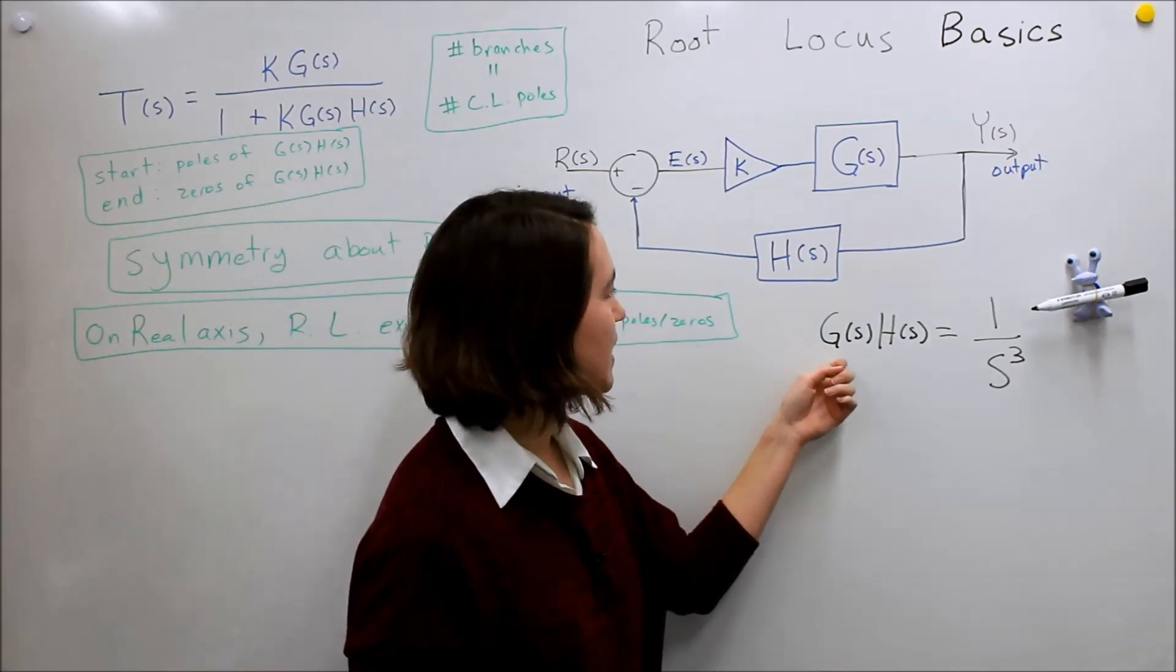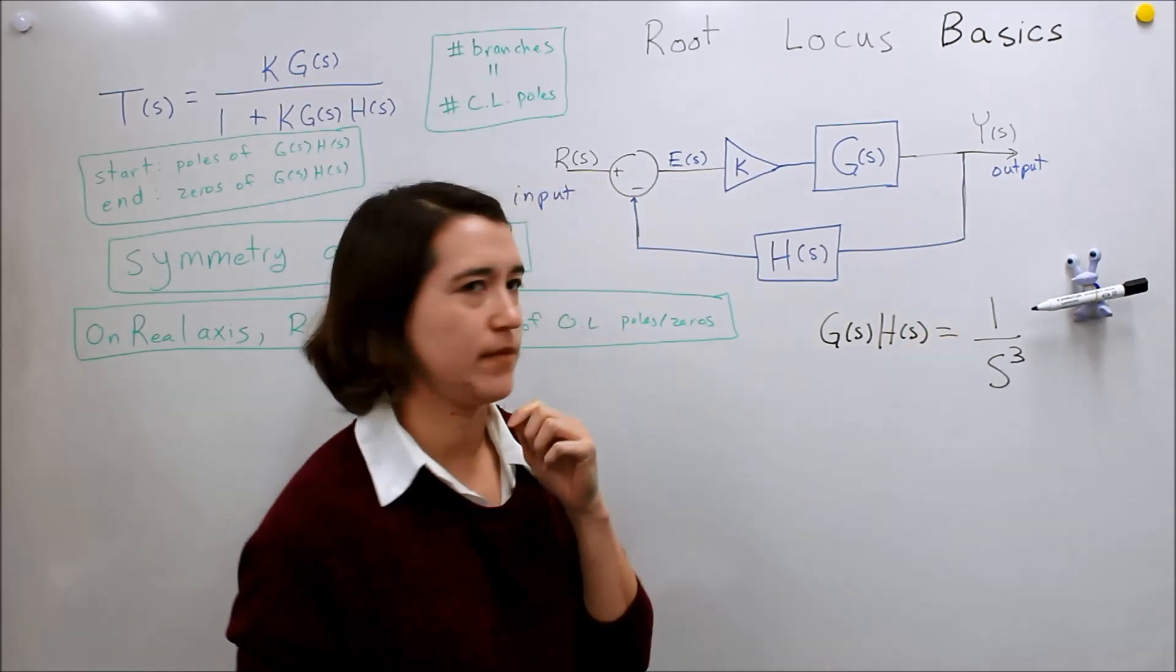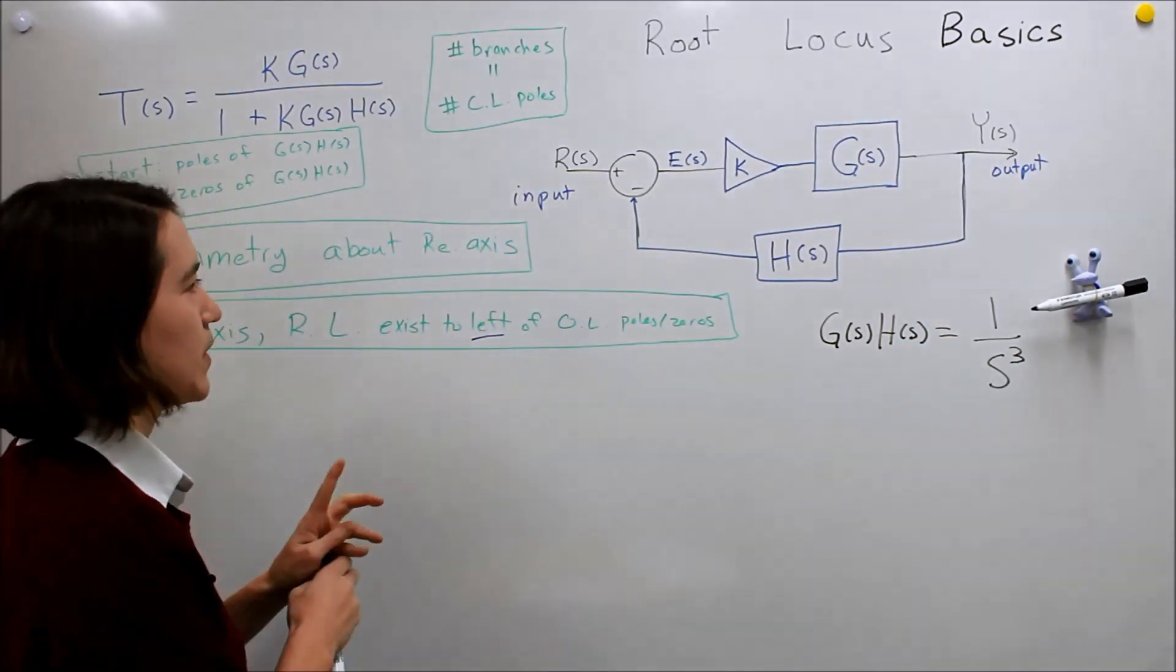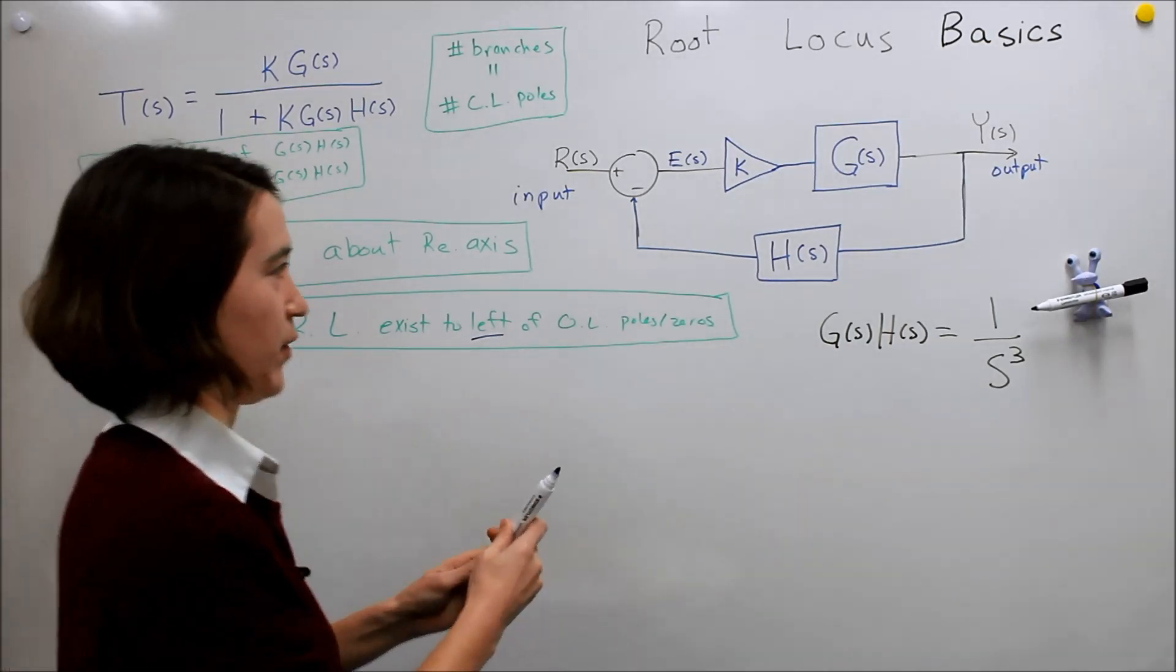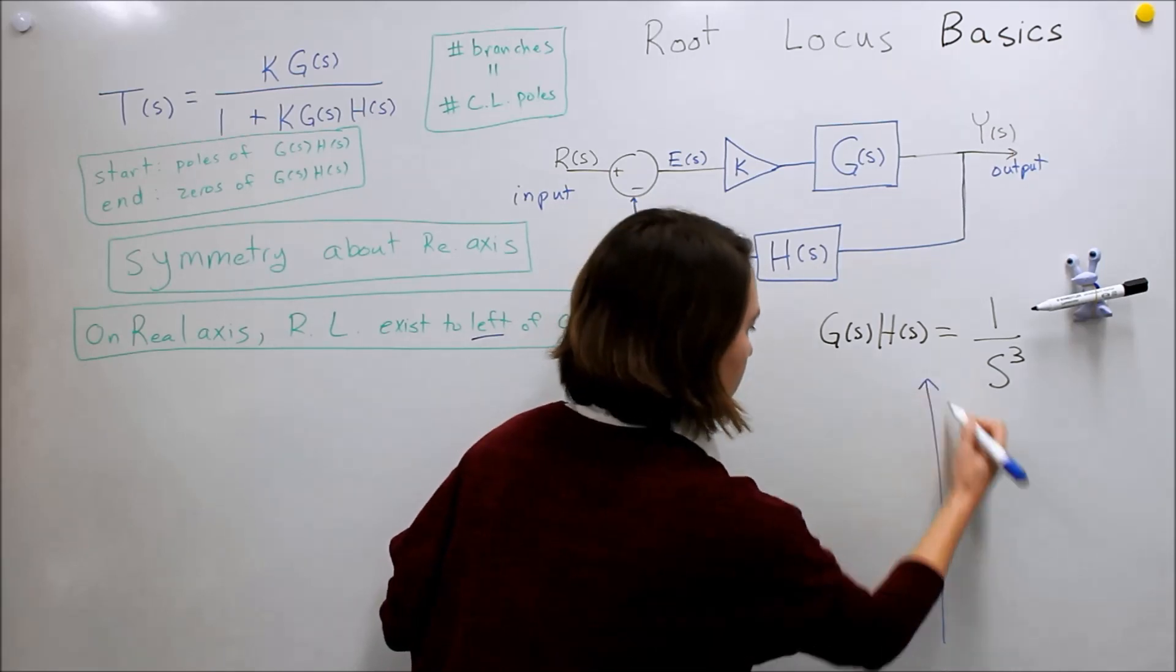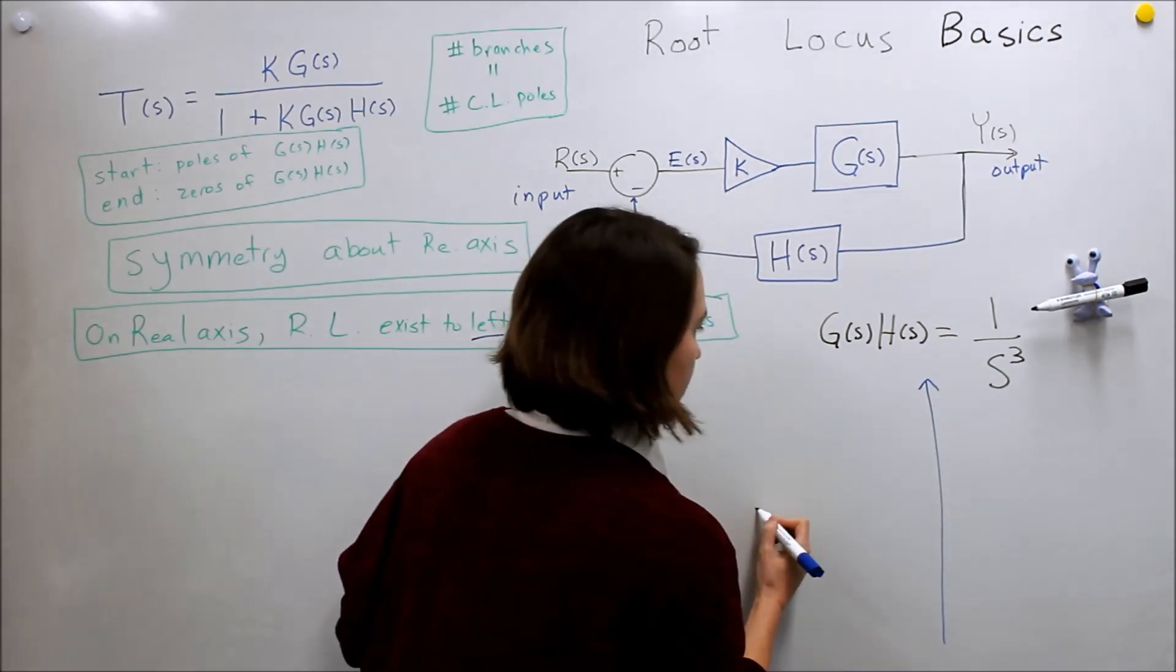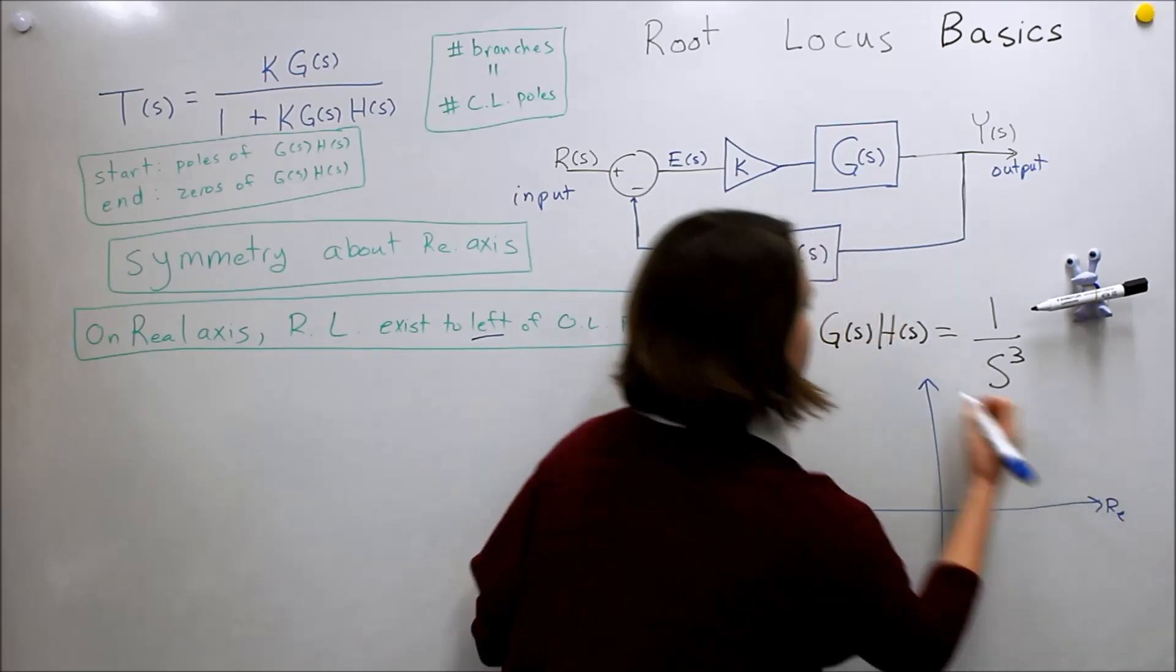We're going to do g times h equals 1 over s cubed. So we'll try to apply as much as we can right away and see what happens. If we draw our system, our s-plane, real and imaginary here...